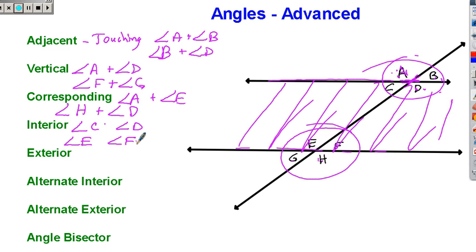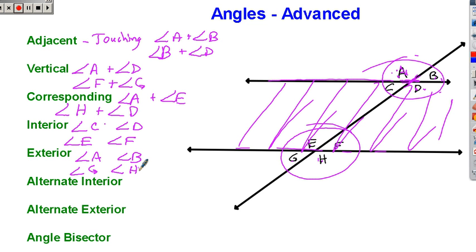The exterior angles are all the angles that are on the outside. Exterior means outside. So that's angle A, angle B, angle G, and angle H — they're on the outside of these two parallel lines.